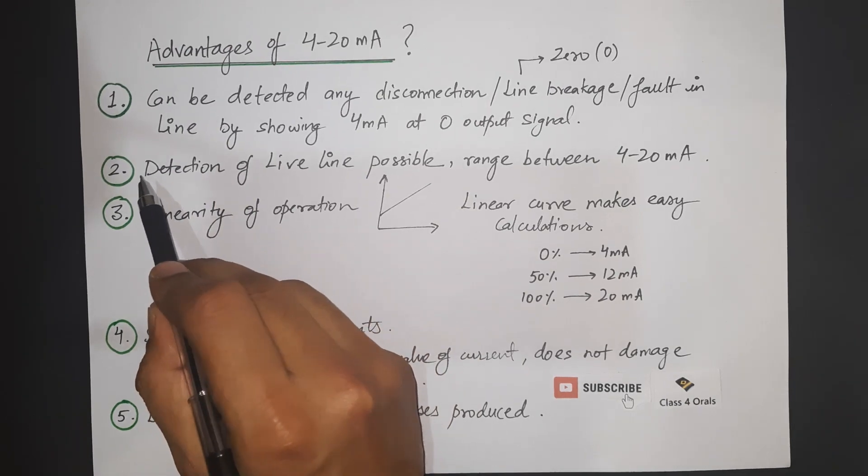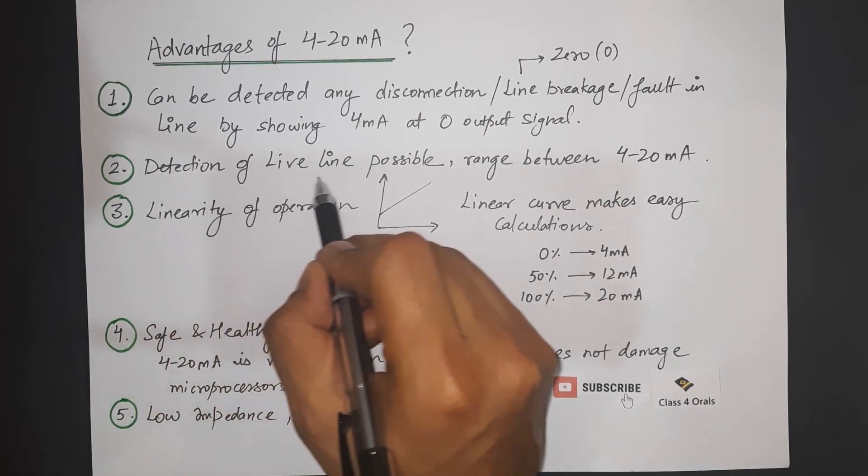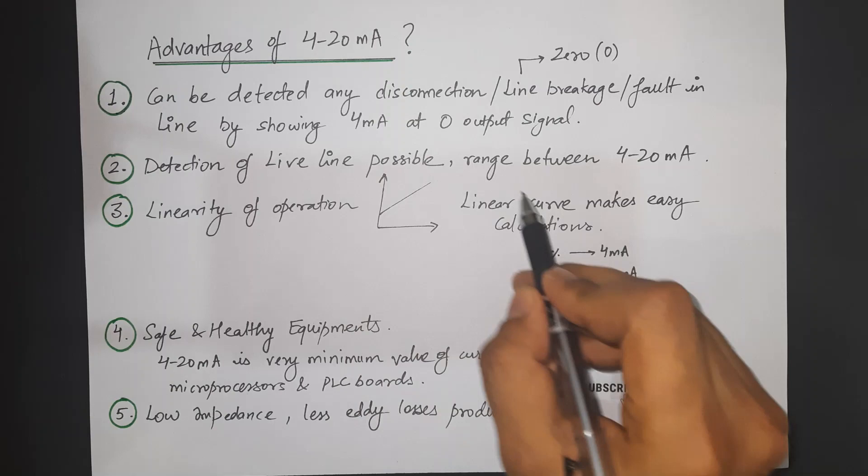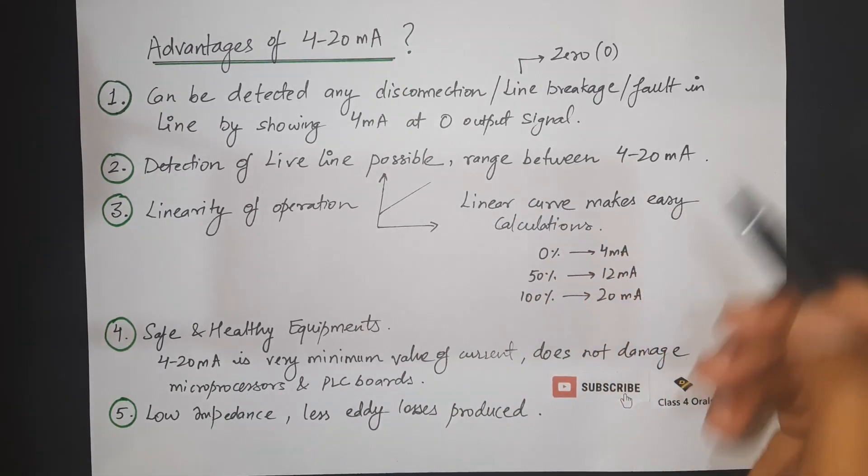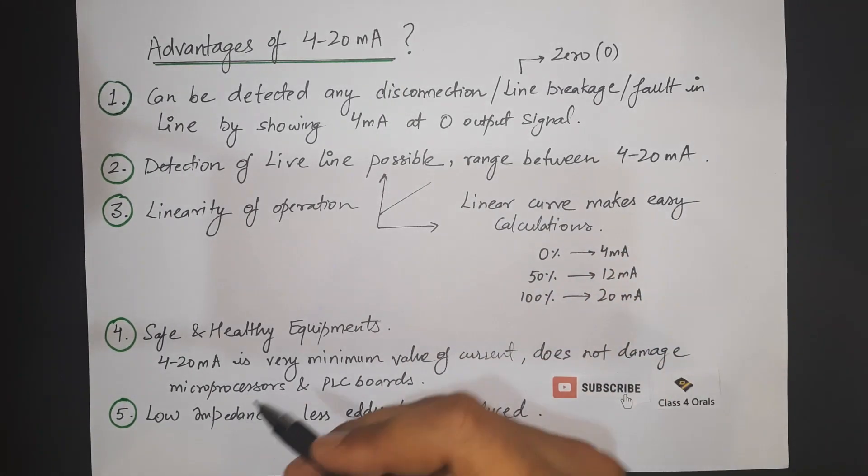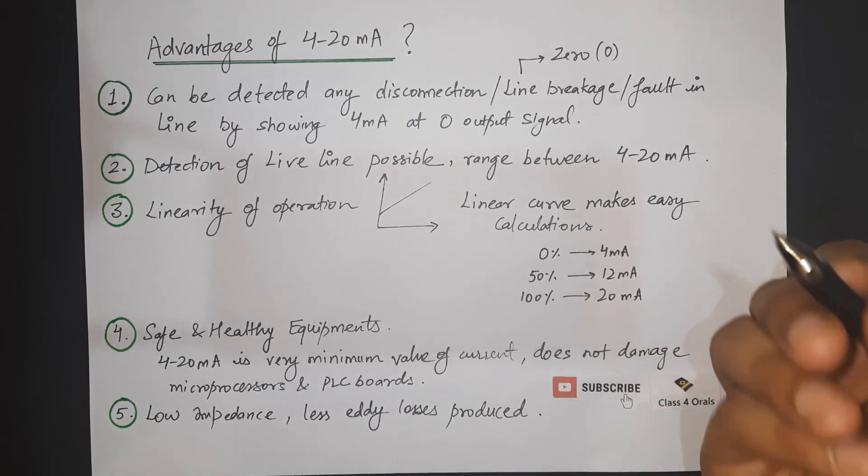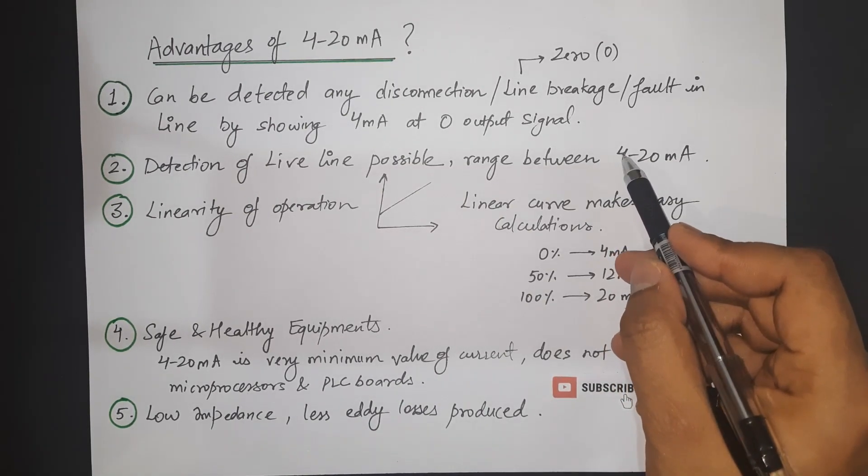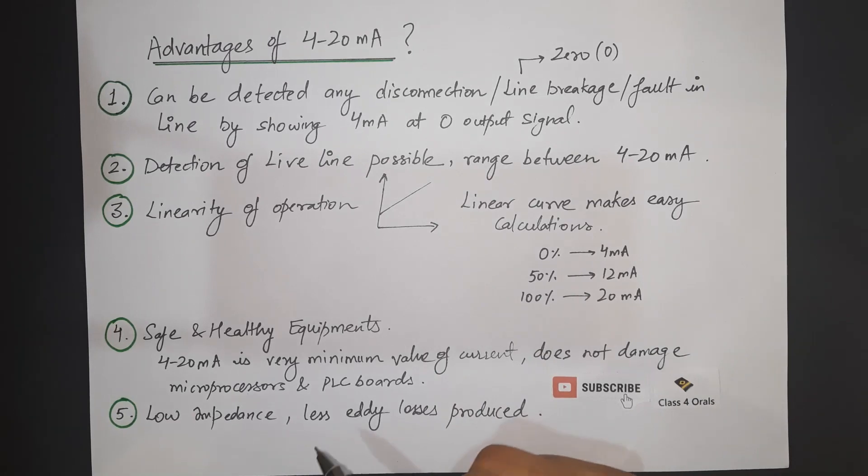Also the second advantage is the detection of the live line is possible ranging between 4 to 20 mA. That means if the line is live there is some current. That means it will show either between the range between 4 to 20 mA.